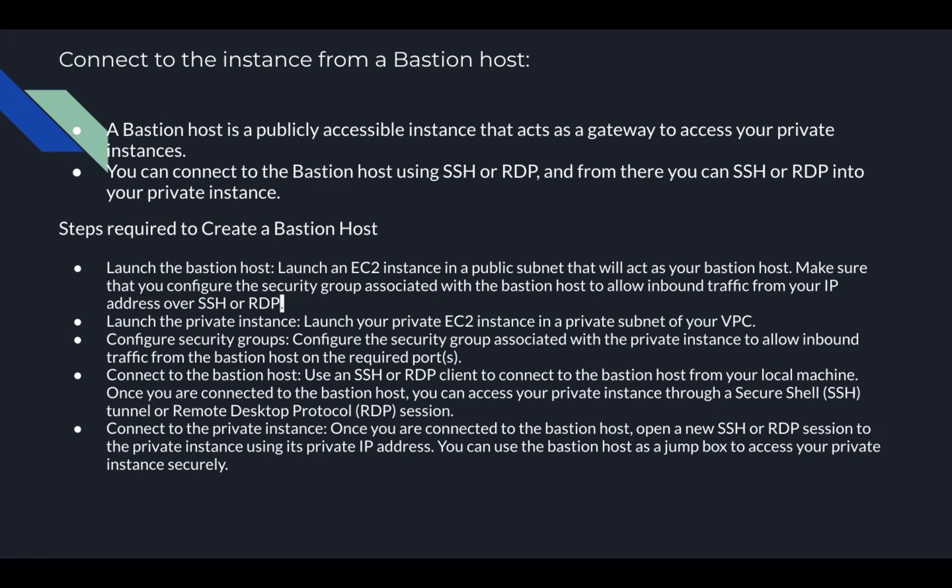In these videos we will concentrate on the bastion host. On the bastion server security group, we will only open port 22 for the static public IP of the particular user. Once that is done, we create the private EC2 instance. On that private EC2 instance's security group, we only open traffic from the bastion server IP, so that only once connected to the bastion server can we access the private servers — not from anywhere else.